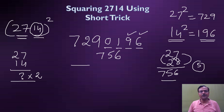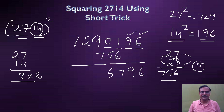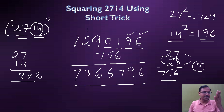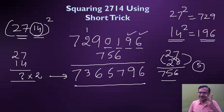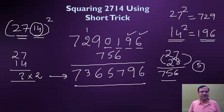Now be ready for the answer — just add vertically: 6, 9+6 = 15 carry 1, 7+5+9 = ... working through: the result is 73657796. Pick up your calculators and check — 2714² = 73657796. So with just two important Vedic rules, you get the square of such a large number using a short trick.